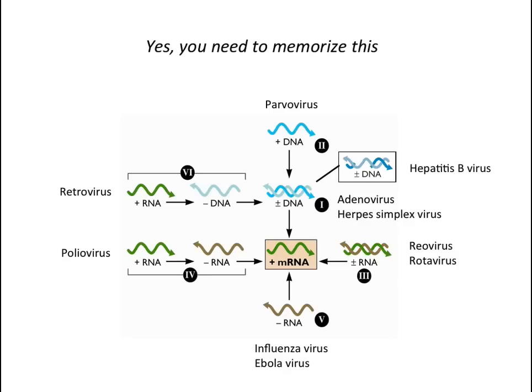In terms of memorization, the one thing I think you should memorize is the number seven — which is easy — and the Baltimore scheme. You put mRNA in the middle, then draw the seven different kinds of viral genome around it. I don't care if you know the numbers. All you need is to draw all these viral genome types and then be able to draw the pathway to mRNA. Just knowing that, you're going to conquer the first half of this course.